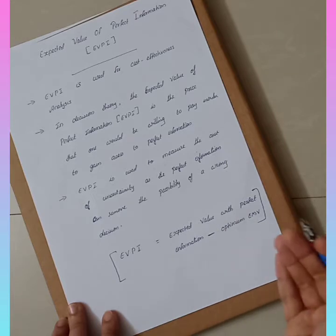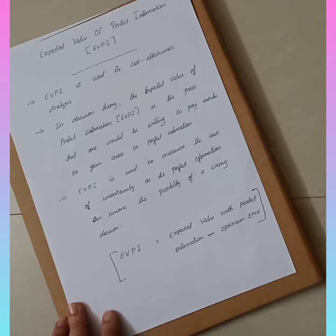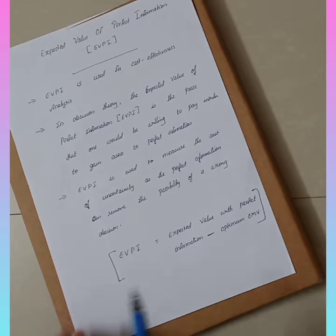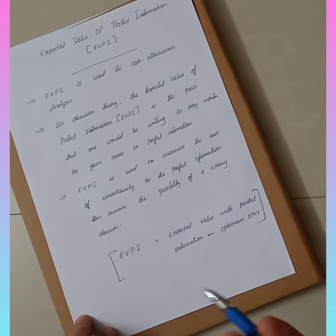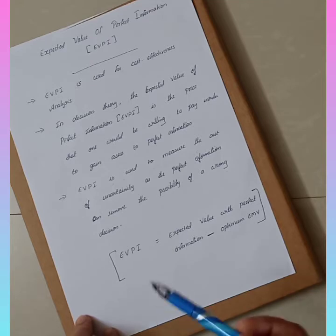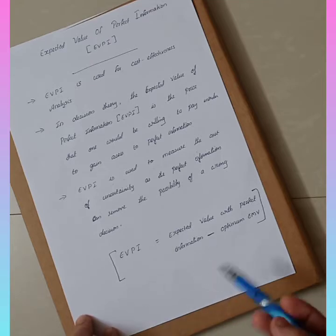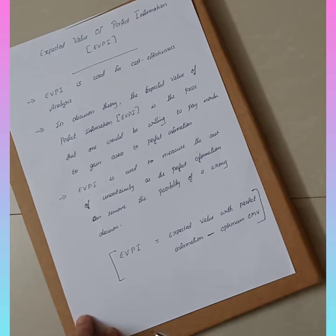EVPI is used in healthcare industries — basically to diagnose disease and proceed with treatment, we require correct information. Take the example of the Nipah virus. Once a person gets affected by Nipah virus, it was new to all of us. Nobody knew how to treat it in the beginning, so they gathered information on how it spreads and how it can be prevented. Such information was gathered and then treatment was done effectively. Whenever you face an uncertain situation, you require correct information in order to reach the correct solution.